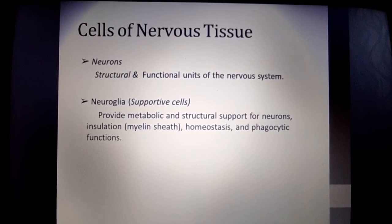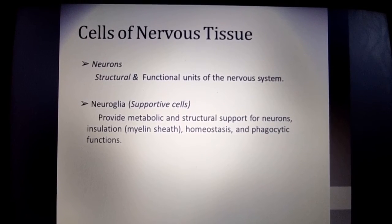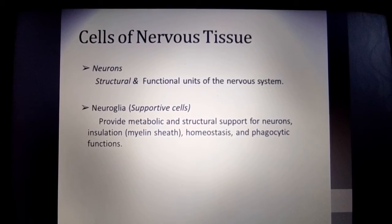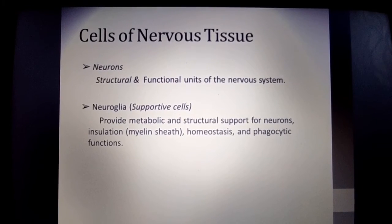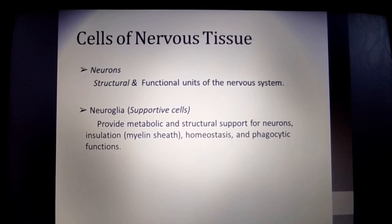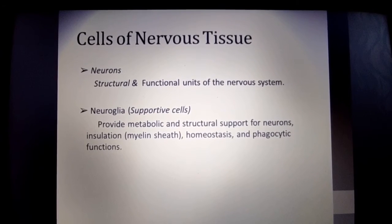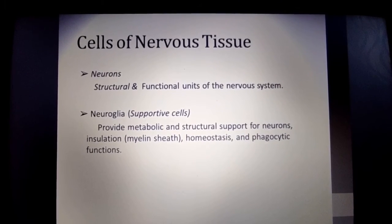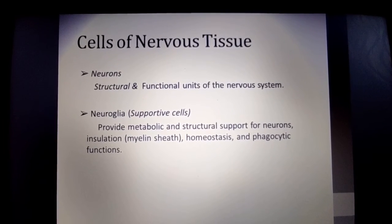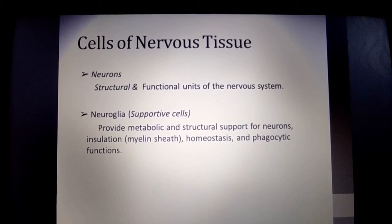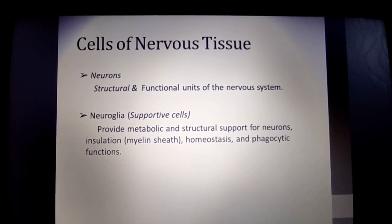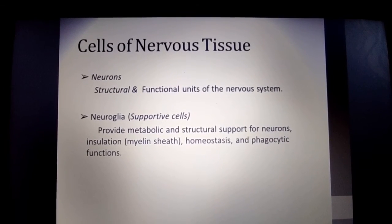The cells of nervous tissue: neurons are the structural and functional unit of the nervous system. There are also supportive cells known as neuroglia, which provide metabolic and structural support for neurons, myelin sheath for homeostasis, and phagocytic function. So the two cell types are neurons and neuroglia.